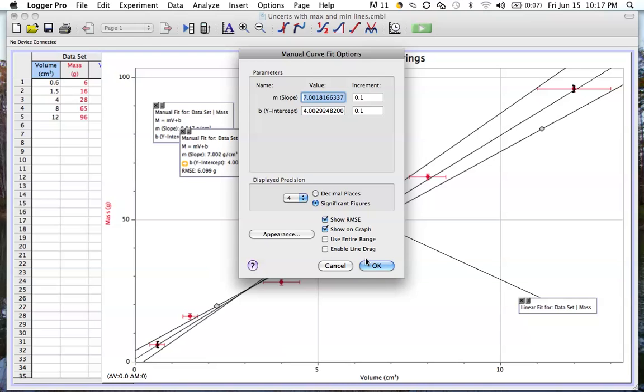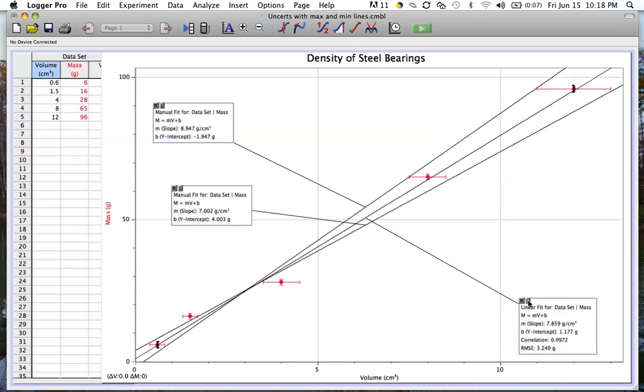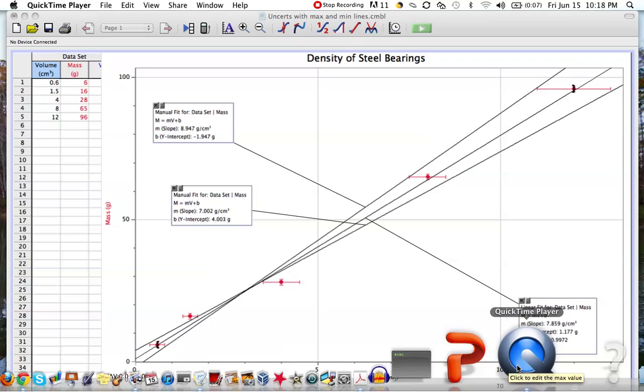So now I can see that my data had a slope of approximately 7.9 for my data. My minimum slope is 7.0, and my maximum slope is approximately 8.9. So now I can work out my uncertainties for my data.